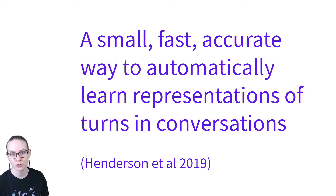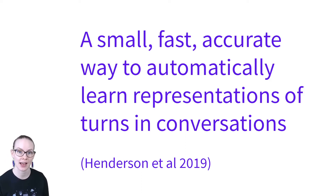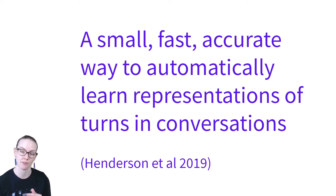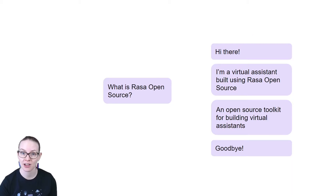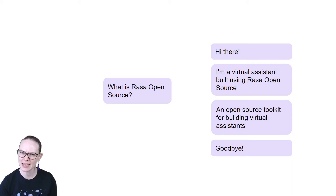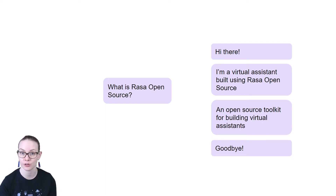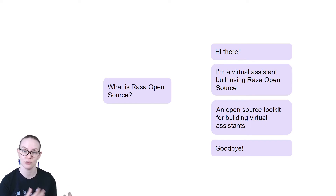ConveRT is a new model proposed in 2019 by Henderson and co-authors that is small, fast, and accurate — a way of representing turns in a conversation as a numerical vector. The specific task that ConveRT is designed to accomplish is called response selection. The idea is you have a number of responses provided for your assistant to use, and given a user input, you select the correct response.